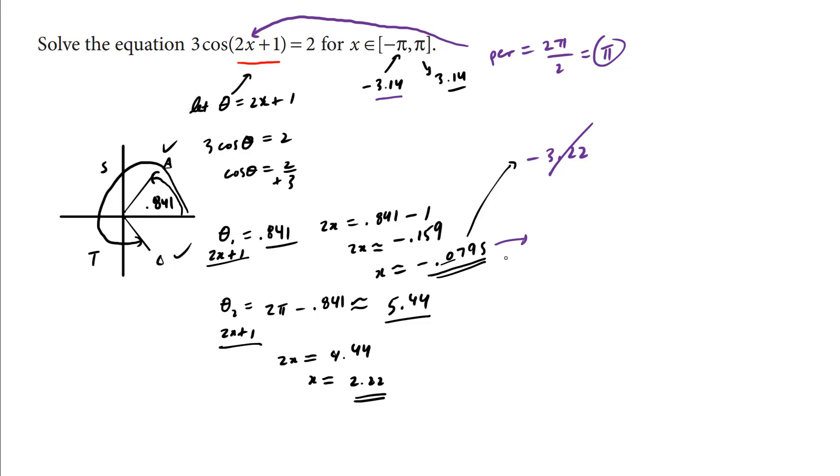So we're going to take this negative 0.079-ish, and this time we're going to add pi. So when you add pi, we get x is approximately going to be 3.06-ish. And indeed, we are within the boundary, so this here is also a good solution. And because we're so close to the boundary, we're not going to bother adding another pi.